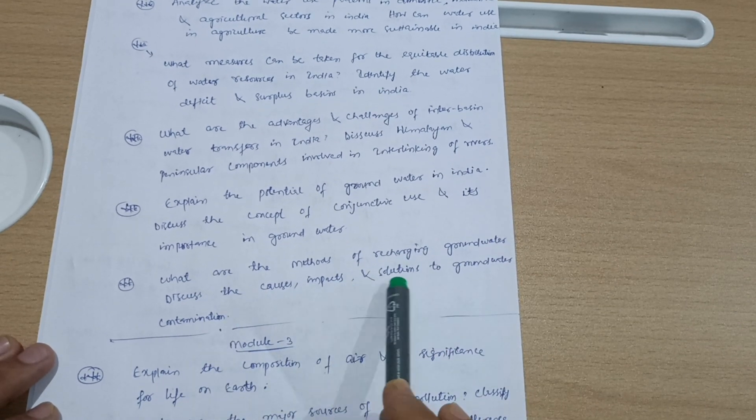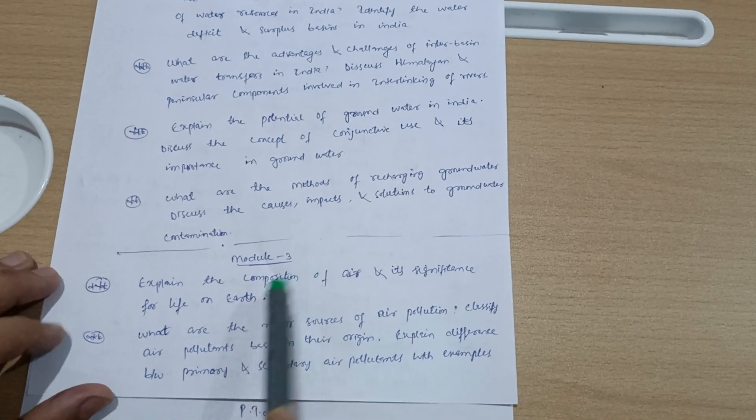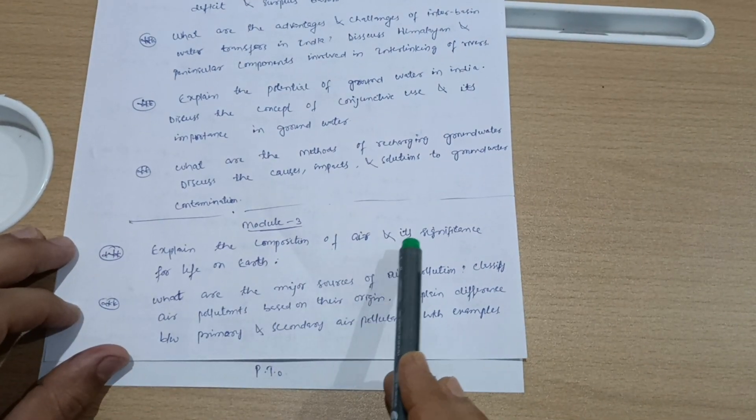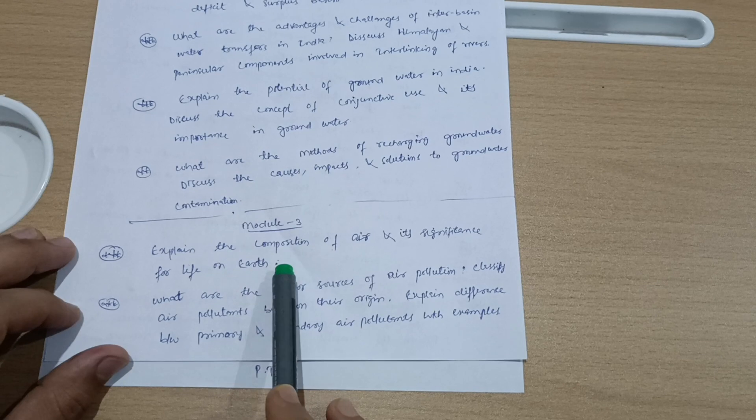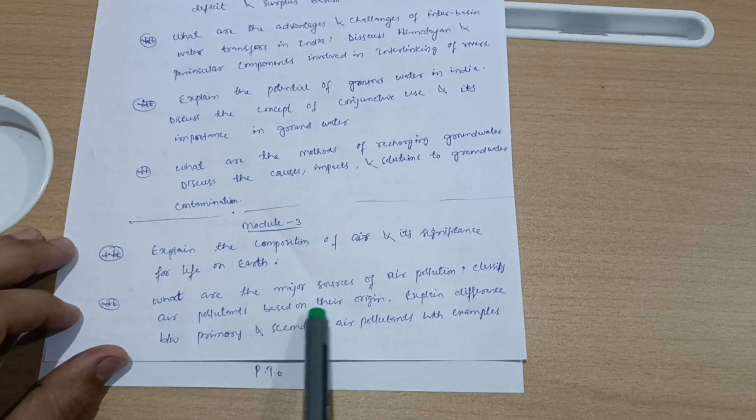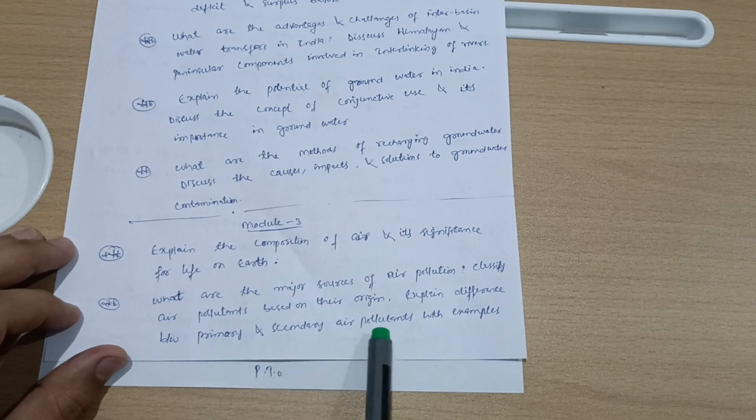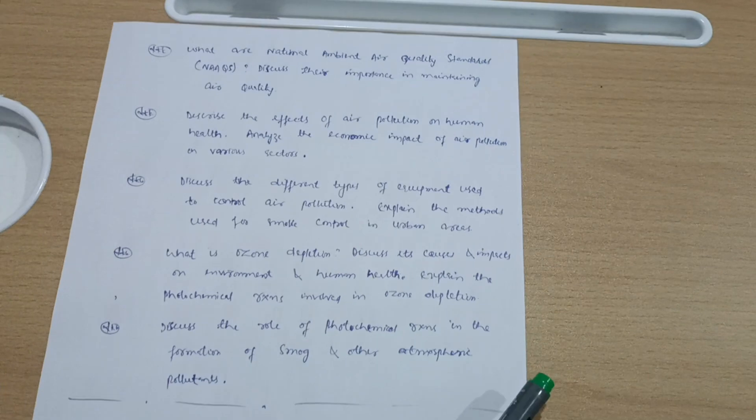Next is Module 3. Explain the composition of air and its significance for life on earth. What are the major sources of air pollution? Classify air pollutants based on their origin and explain the difference between primary and secondary air pollutants with examples. Next questions from Module 3...